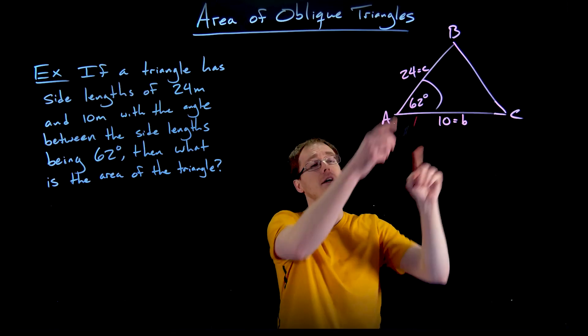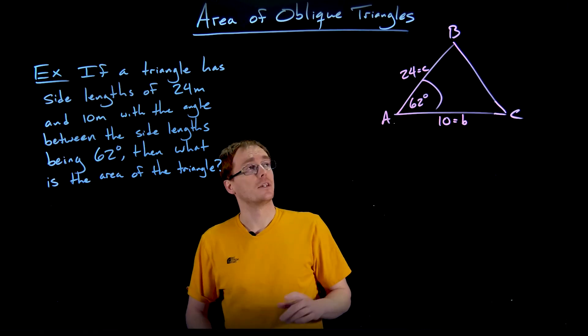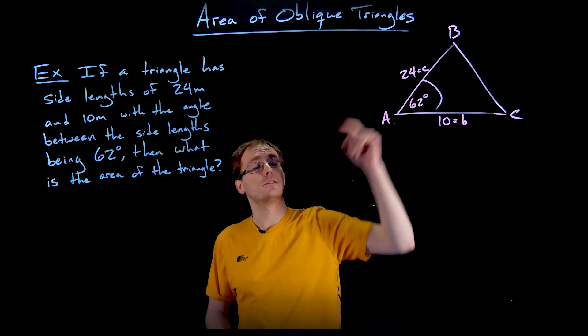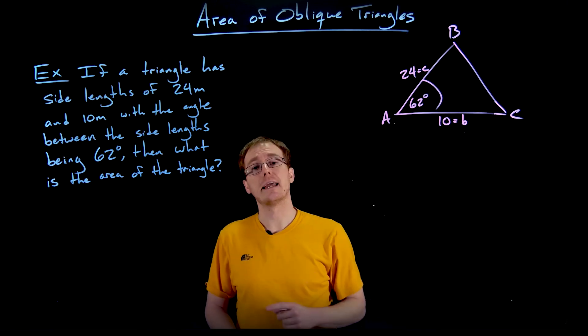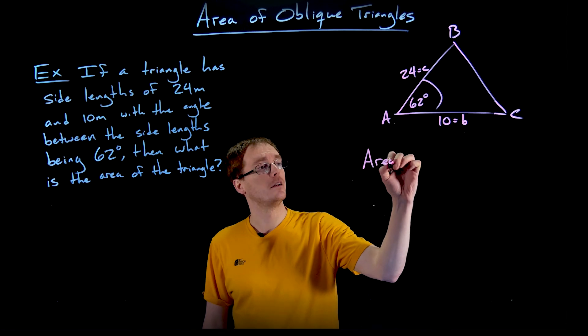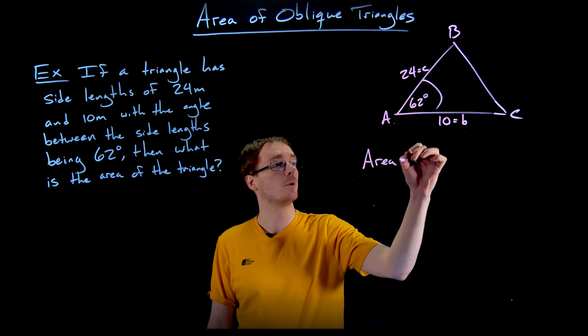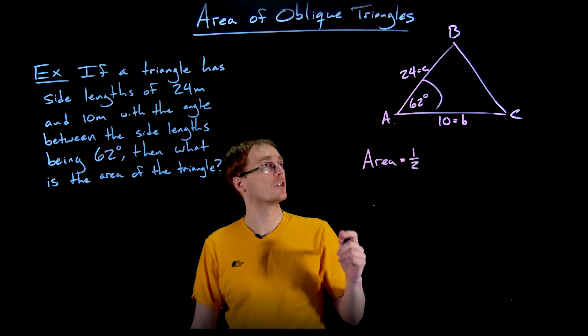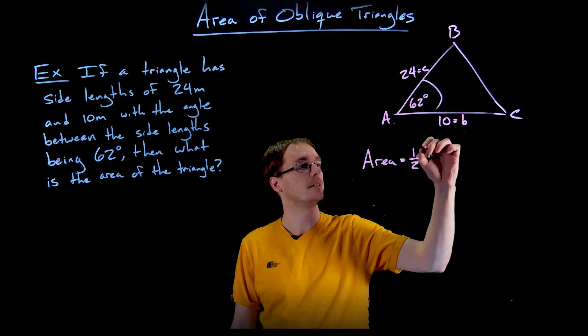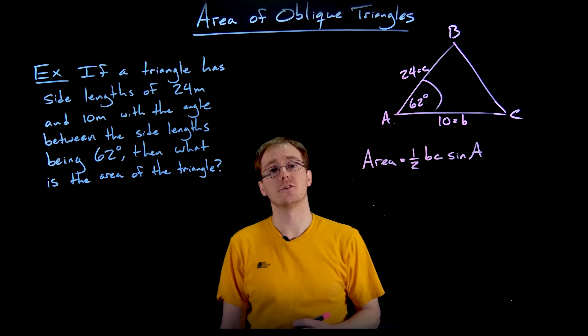It doesn't actually matter if we switch the roles of B and C here. We'll get the same answer in the end. And so the idea is we know two side lengths B and C, as well as this angle A, and so we can use that and our newfound area formula to find the area of this oblique triangle. So remember the area is always one half the product of the two side lengths. So in this case, B times C times sine of the angle between those two side lengths.